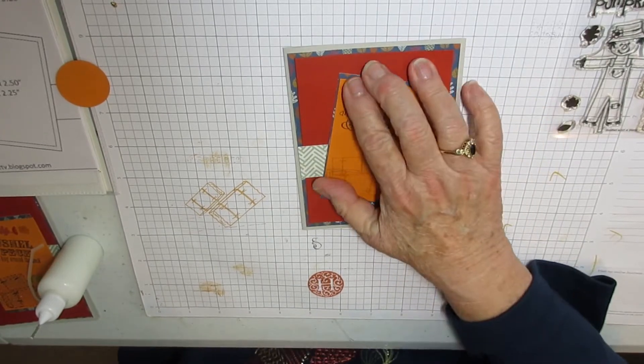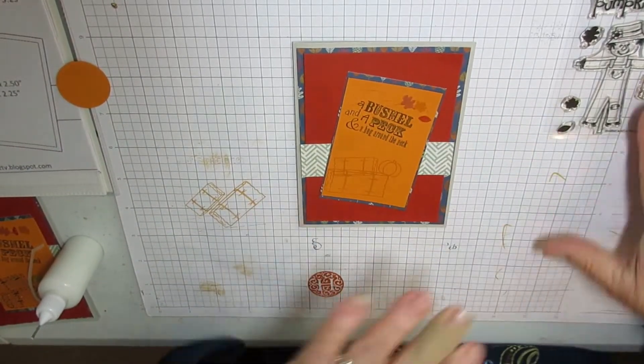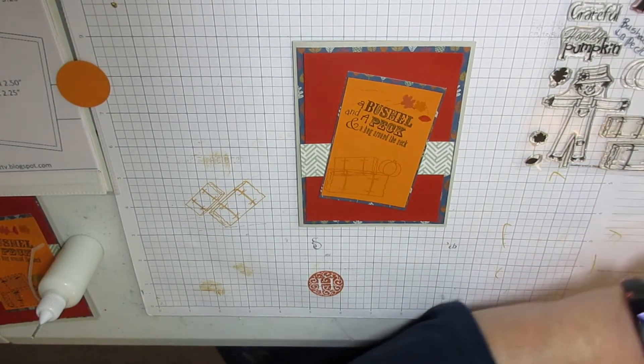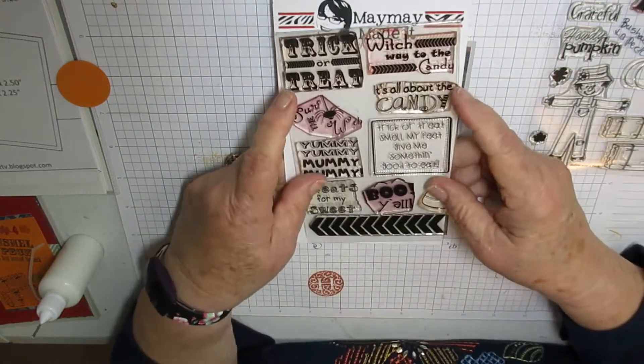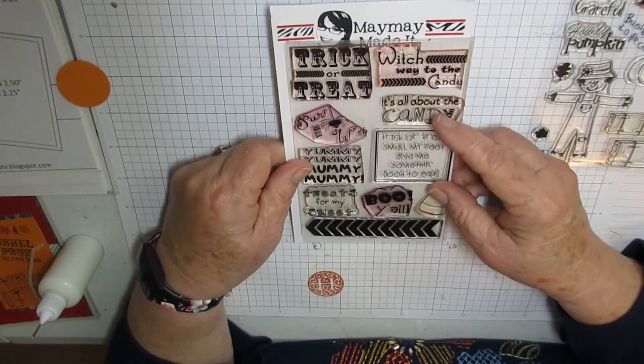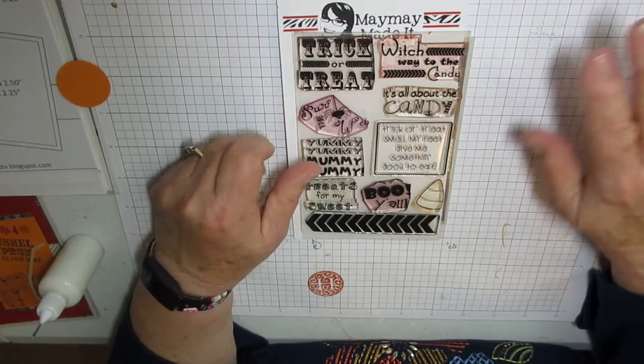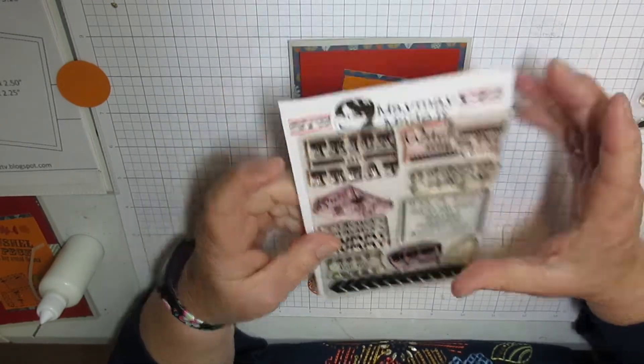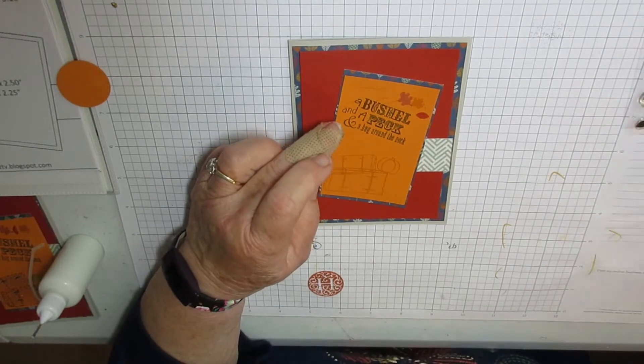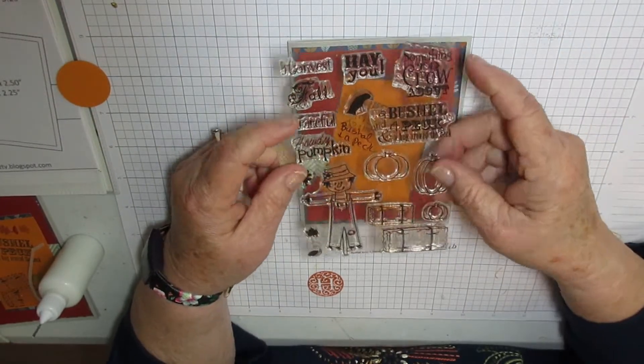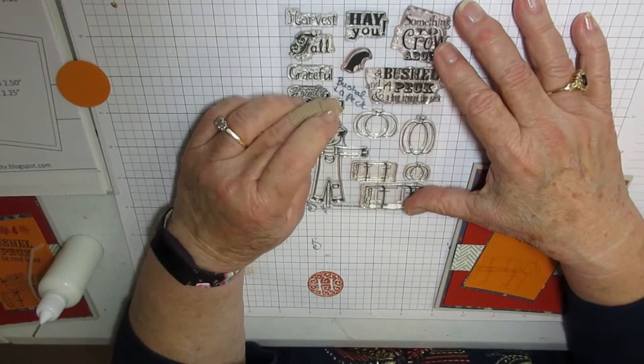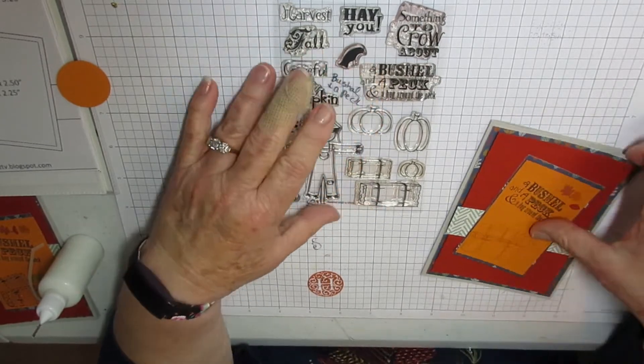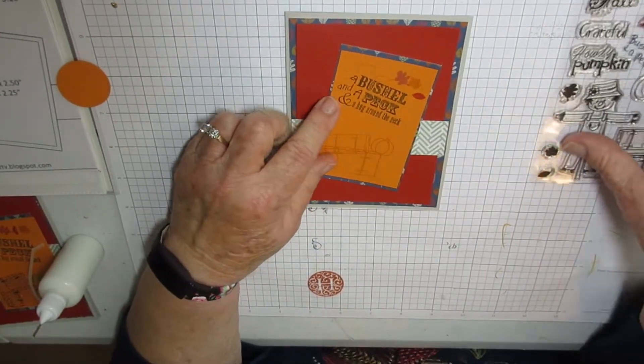Sometimes it works, sometimes it doesn't. This one does. I used a stamp set from maymaymadeit.com, and this one is from her set called country pumpkin. It's still on her website so you can go and order that. It's really cute. I used a bushel and a peck on this one. It's kind of a Thanksgivingy looking stamp set.